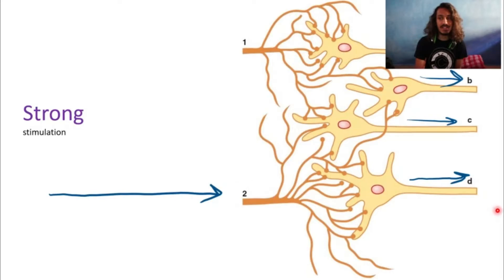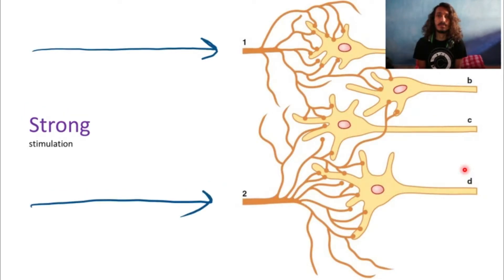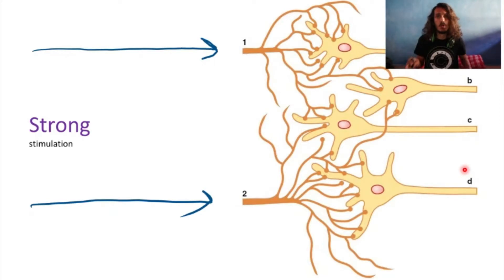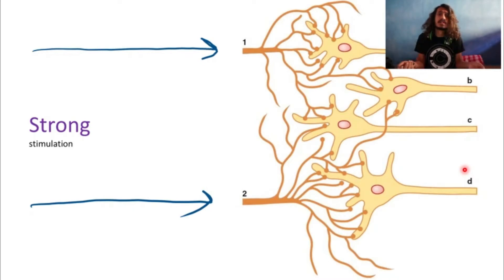So axon one stimulated individually gave three action potentials, and axon two stimulated individually also gave three action potentials. Mathematically, if we were to stimulate both axon one and axon two together — not yet knowing about the fringe and discharge areas — we would naturally assume a total of six output action potentials.